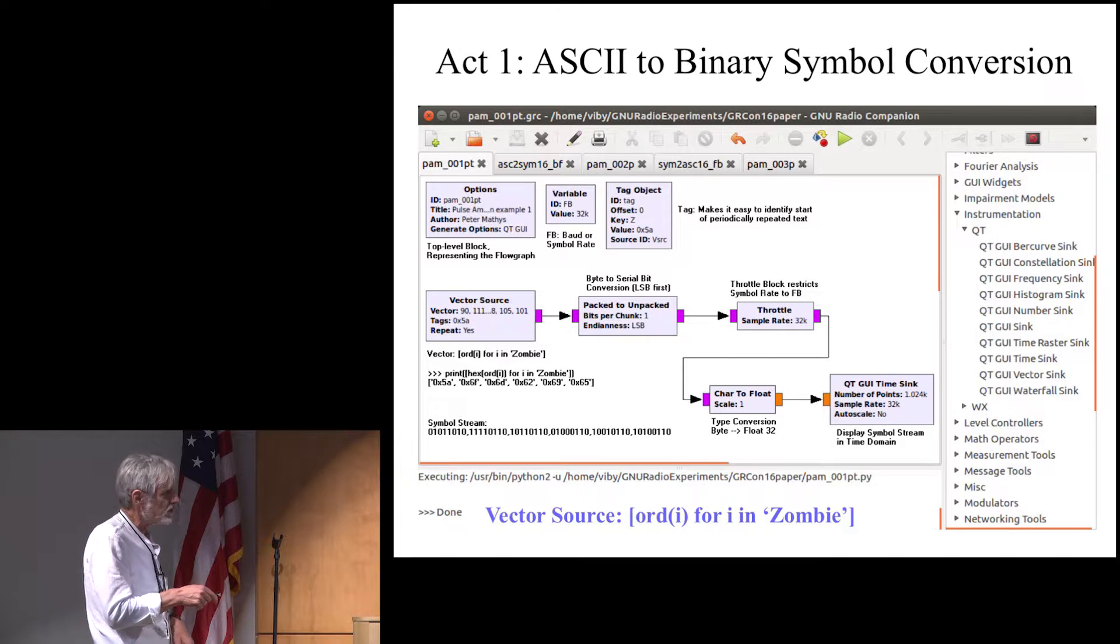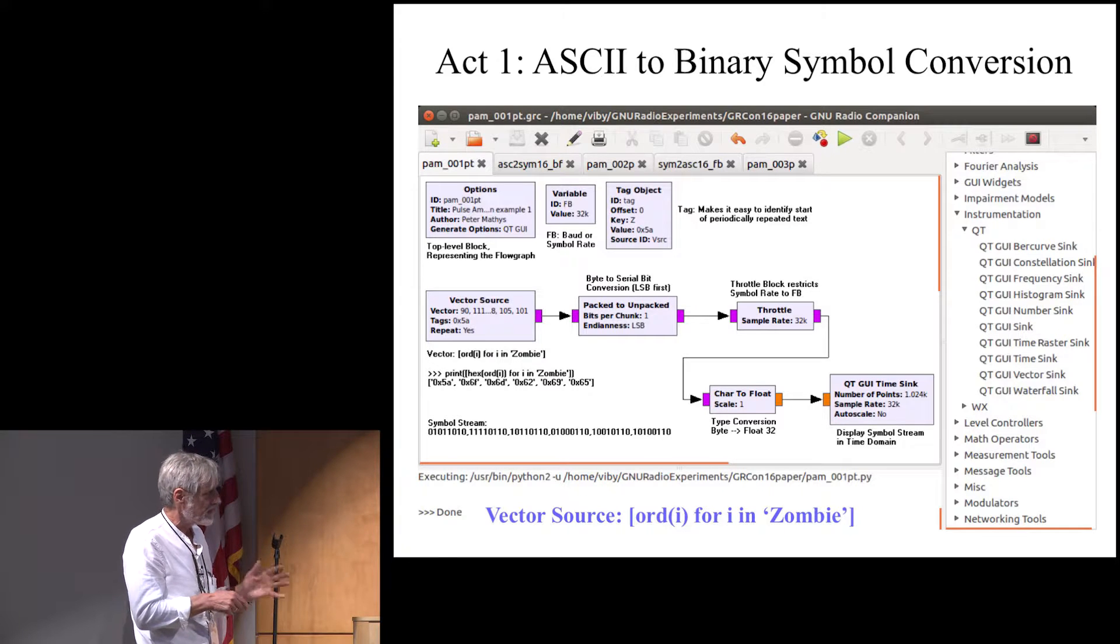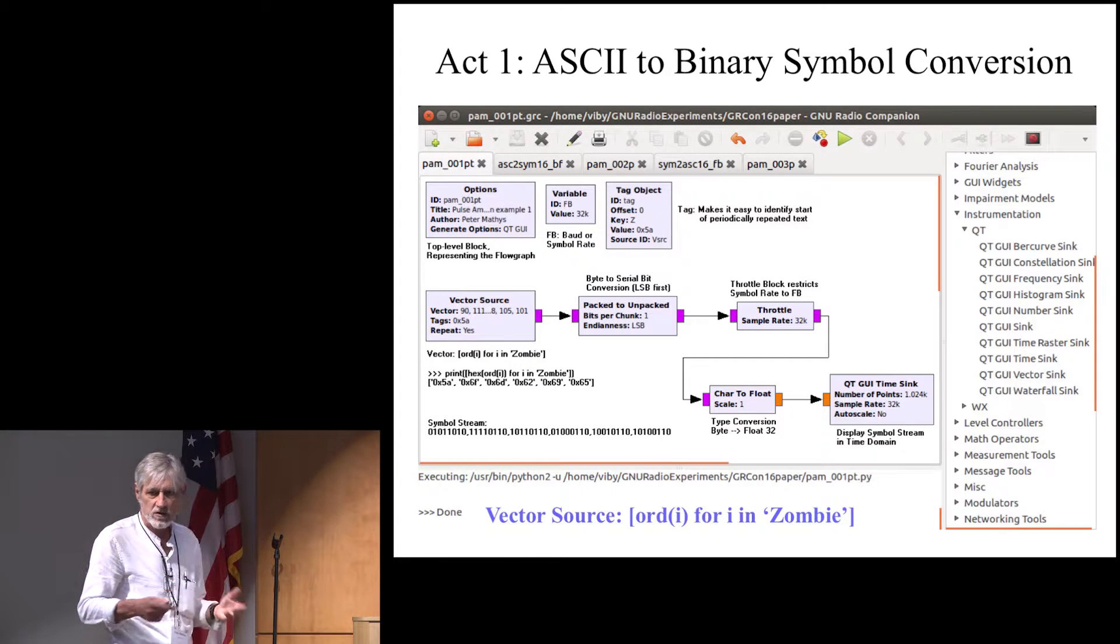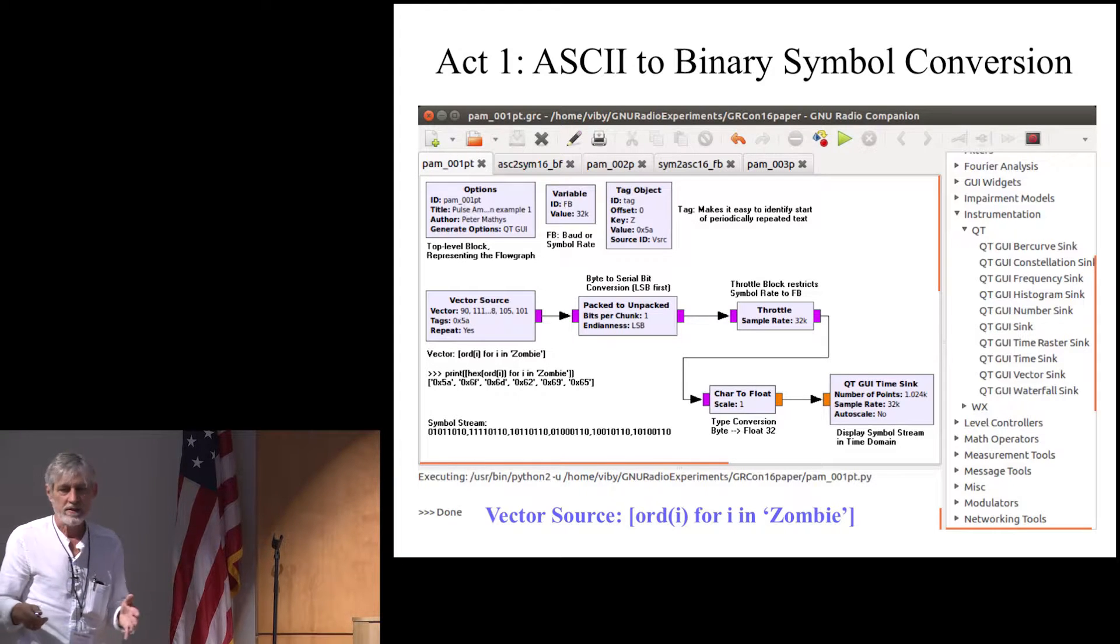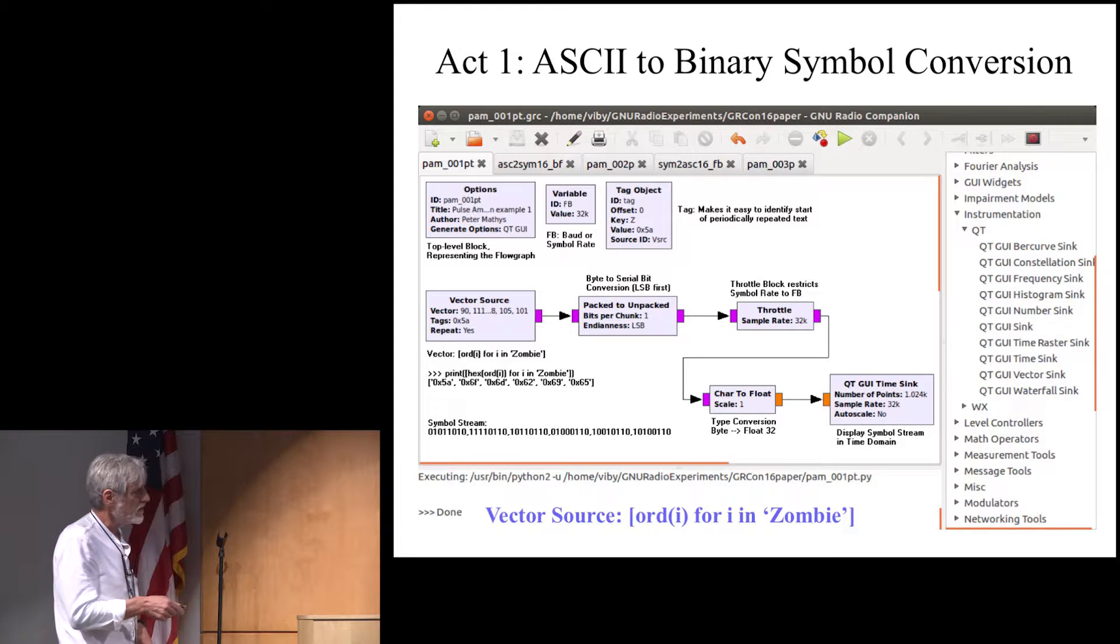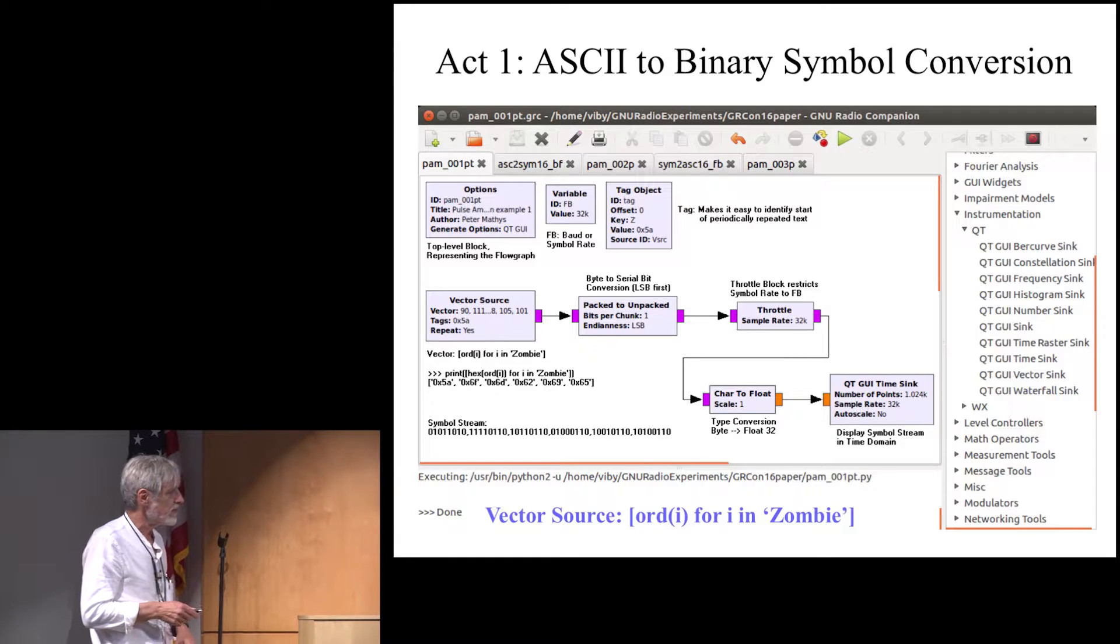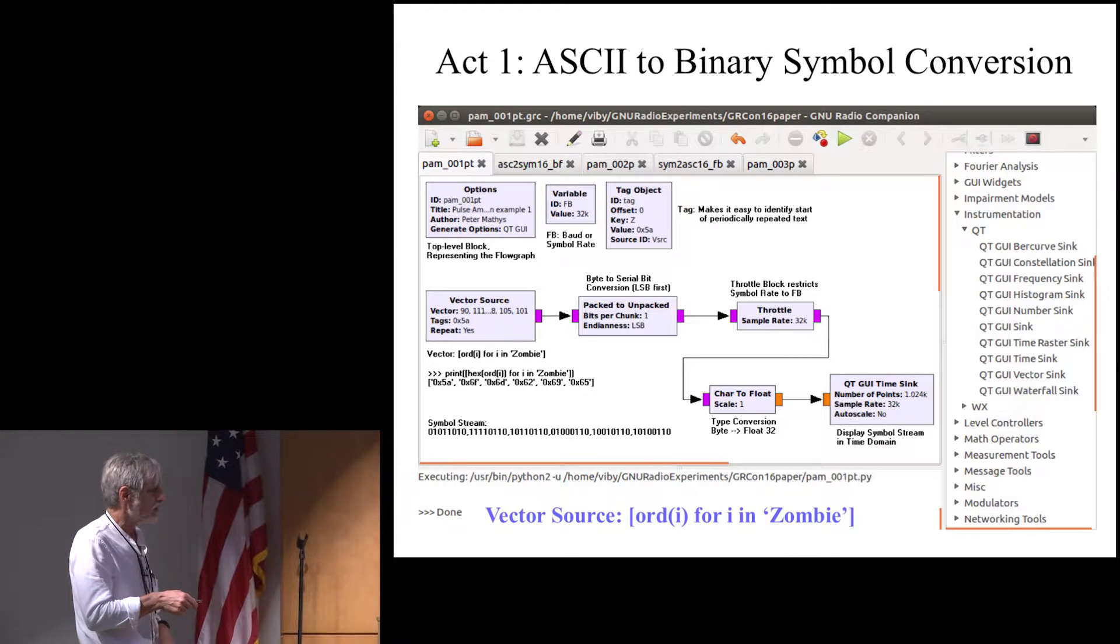Then we do pack to unpack. That's a regular GNU radio block where we do the conversion from the bytes to the bits. Then because we are just simulating this in software, we need to have something that holds back or sets the rate of how we transmit. If you just use the software, it's just going to go wild and transmits at any rate. So we have the throttle block in here that keeps it at the rate that you want to have. The FB here is the baud rate, and we are setting this at 32 kilo samples per second, or kilobaud per second.